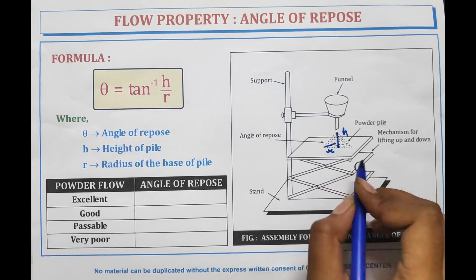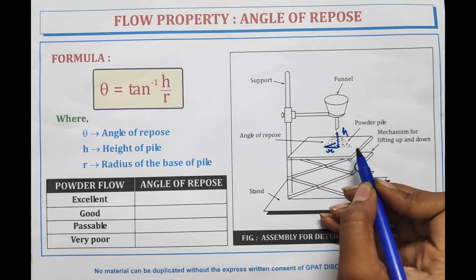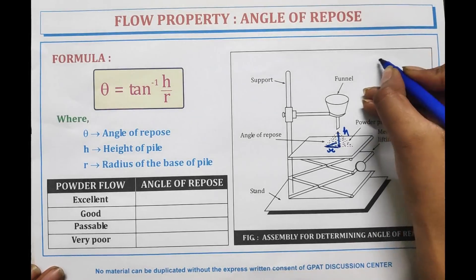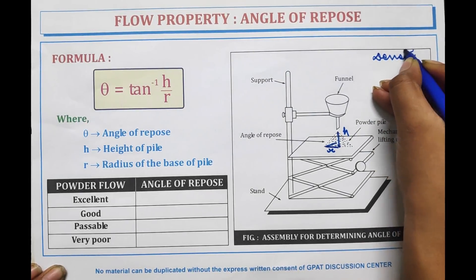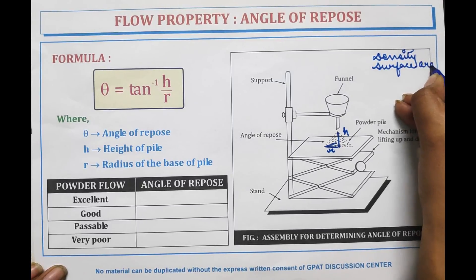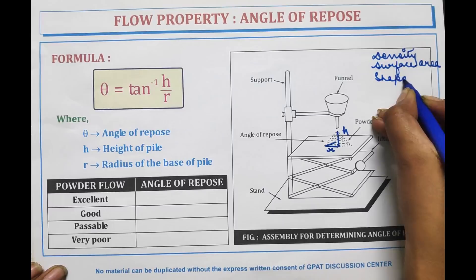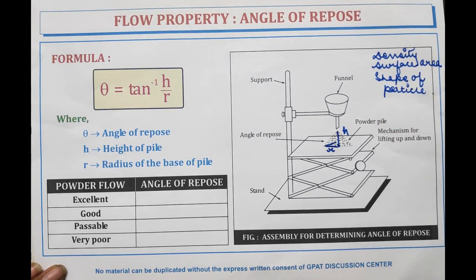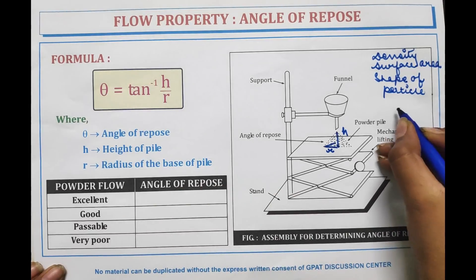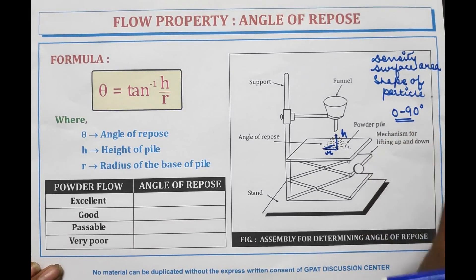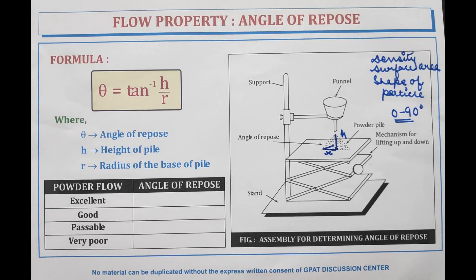The internal angle between the surface of the pile and the horizontal surface is known as the angle of repose. The angle of repose majorly depends on density, surface area, shape of particles, and coefficient of friction. The angle of repose is always between 0 to 90 degrees, and this is the range of the angle of repose.